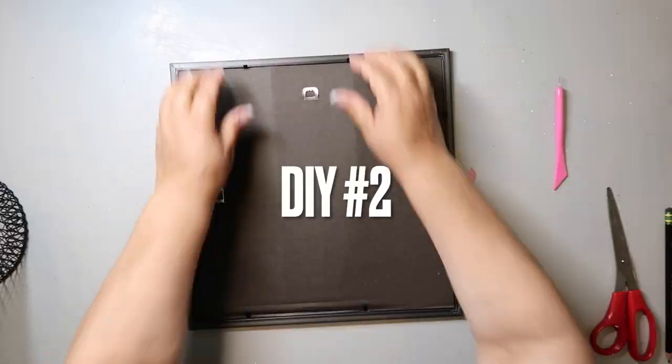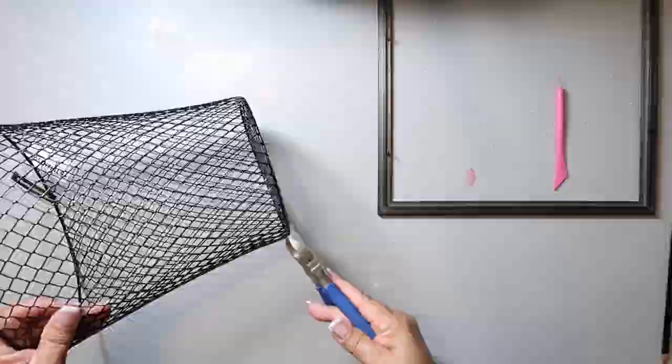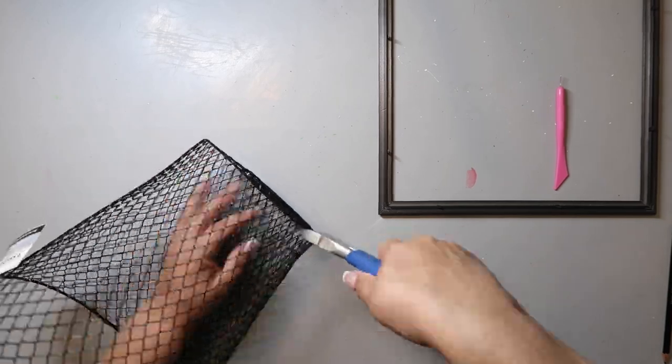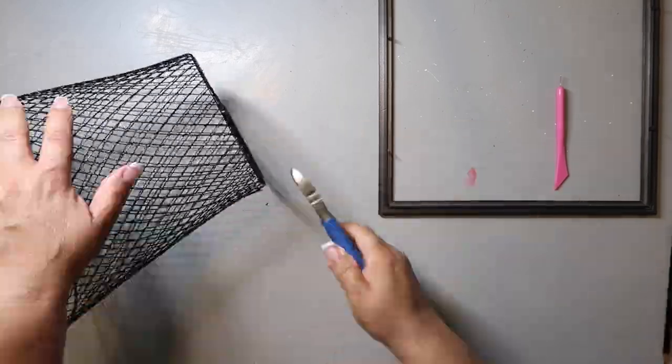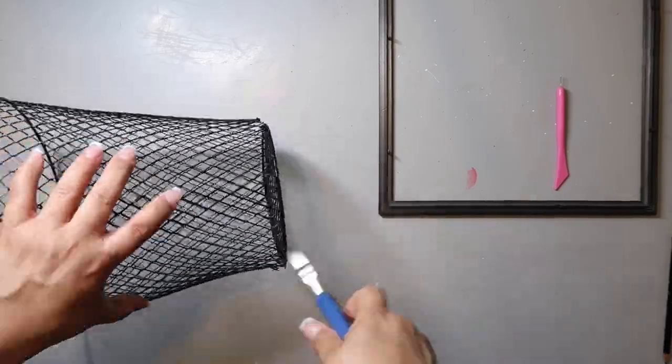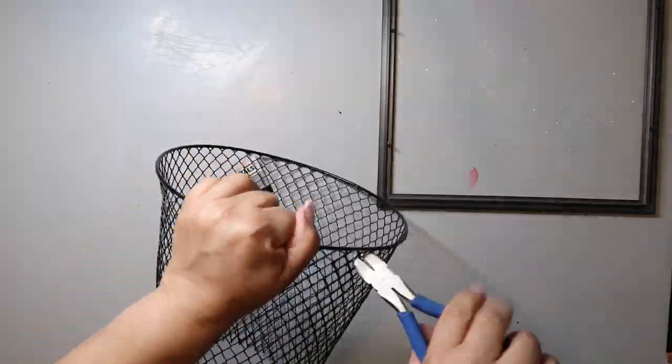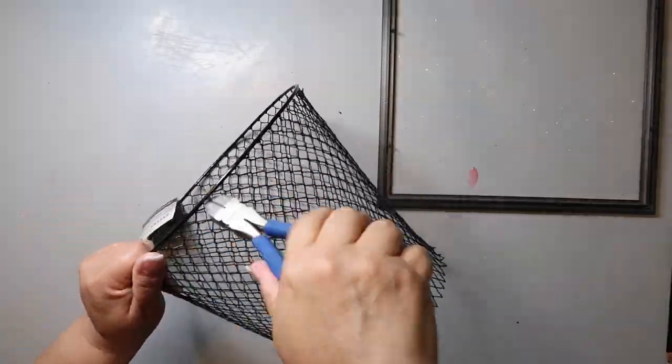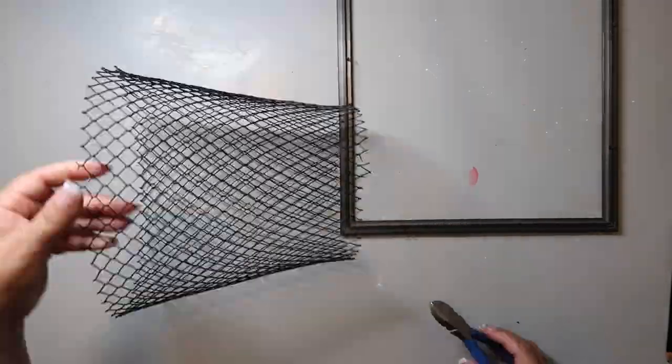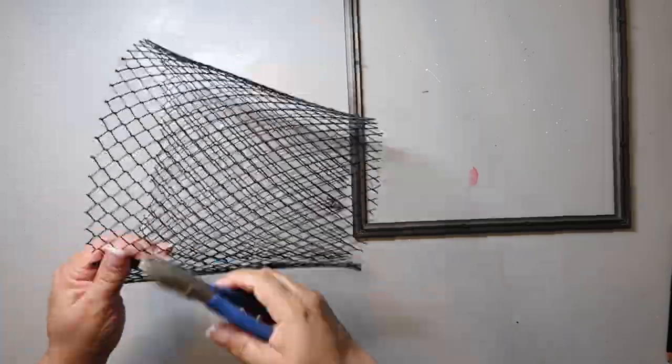For DIY number two, I'm showing you this picture frame, but I don't end up using it. You'll see why in just a moment. Oh, hello, Captain. But I'm taking this mesh trash basket thing and I am taking my snippers and I'm going all the way around the base and I'm just kind of detaching it. And I'm trying to get as close to the bottom as possible because I don't know how much of this mesh that I'm going to need. And so I also have to do the same to the top. I'm just trying to be as close to the top as possible. And I'm now going up the side.